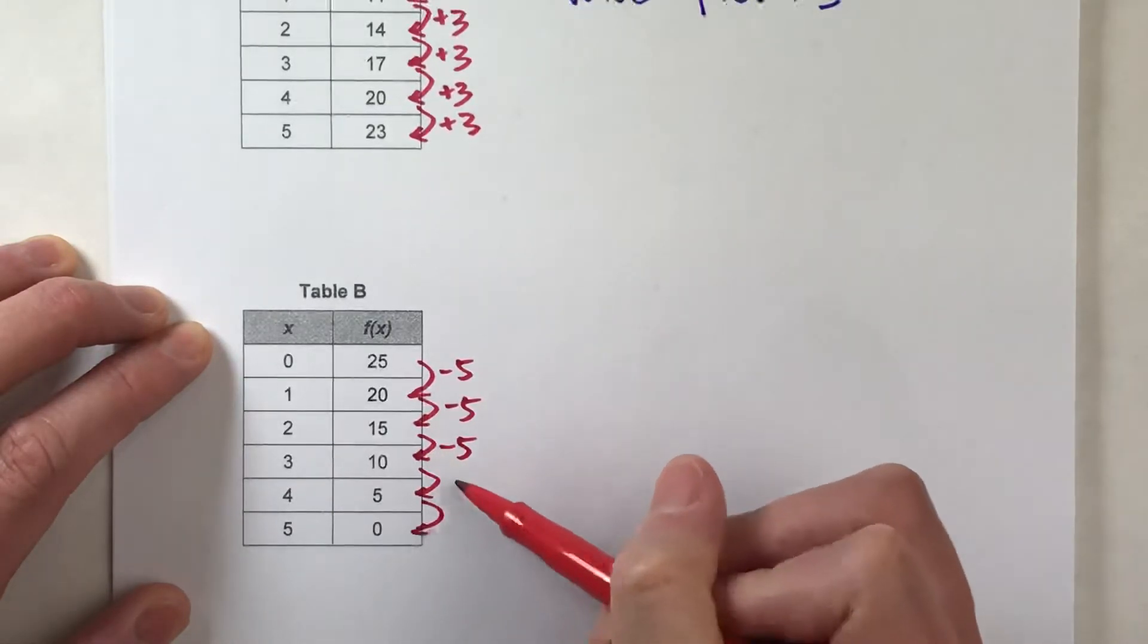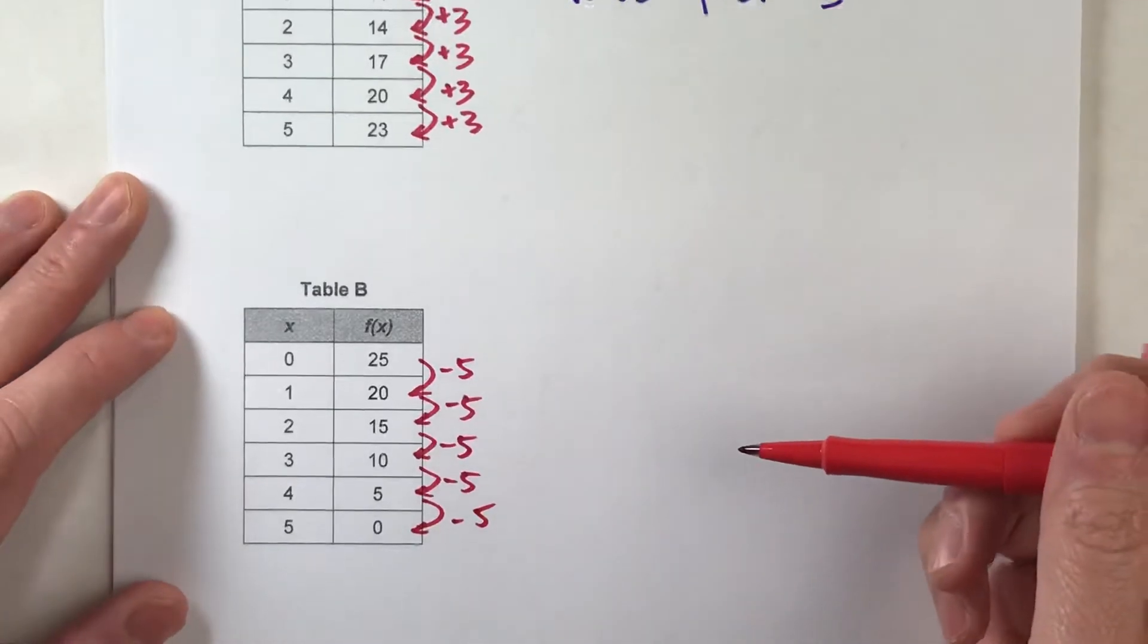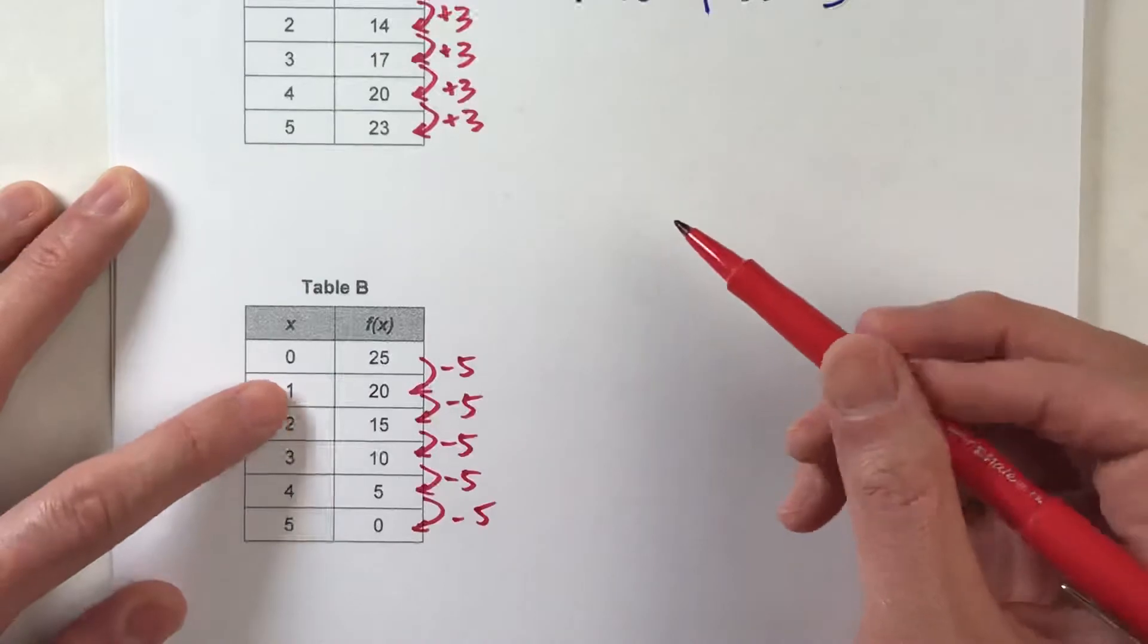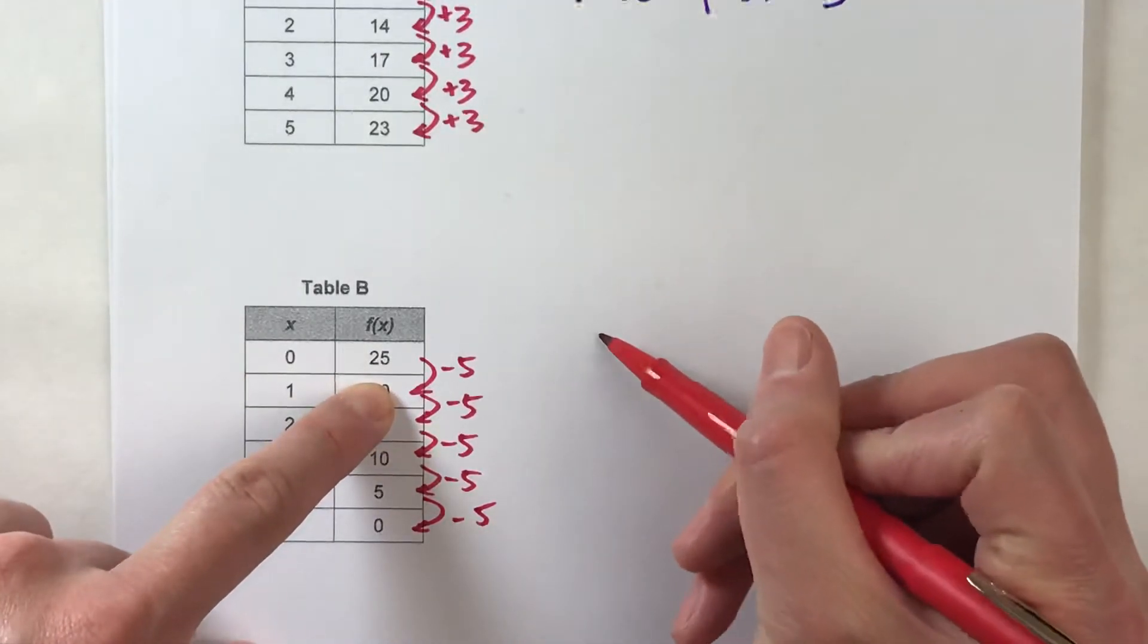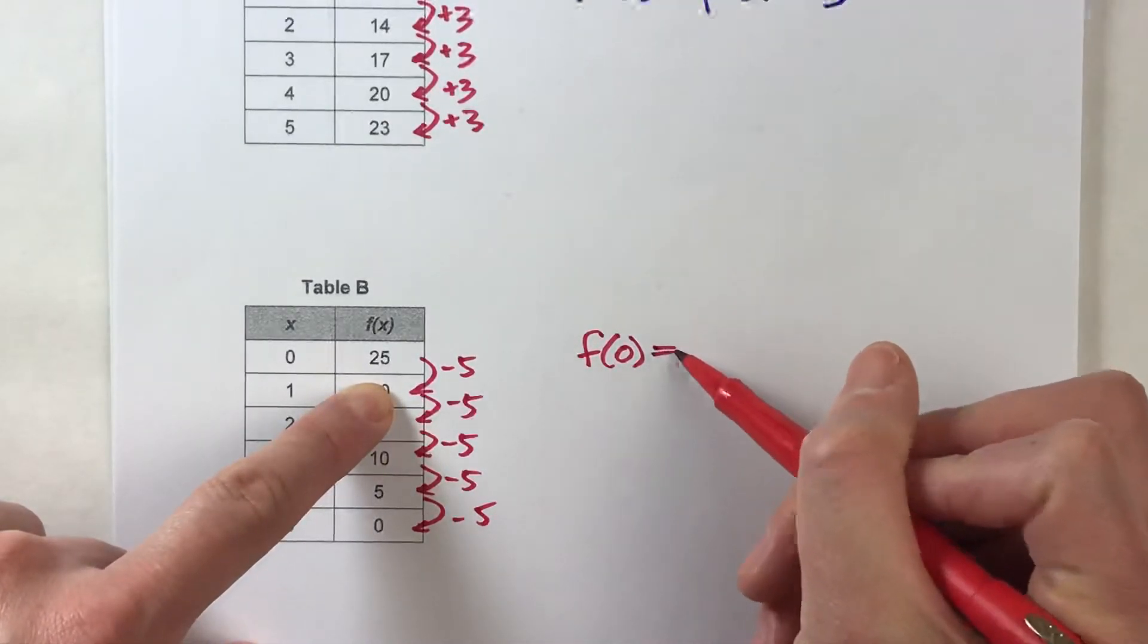So, this pattern is fairly straightforward. To write the recursive equation, remember, we start at f of 0 equals 25. So, our first part of our equation is we're going to say that f of 0 is 25.